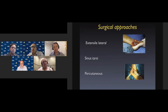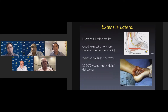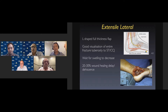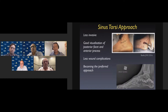If the decision for surgery has been made, there are different options for surgical approaches: the extensile lateral, sinus tarsi, and percutaneous. The extensile lateral approach has been commonly used for many years — it is an L-shaped full-thickness flap which allows good visualization of the entire calcaneus all the way to the subtalar and calcaneal cuboid joint. It is a fairly big dissection, so it is important to wait for the swelling to decrease. Although it provides excellent exposure, there is a small but significant rate of wound dehiscence and wound infection.